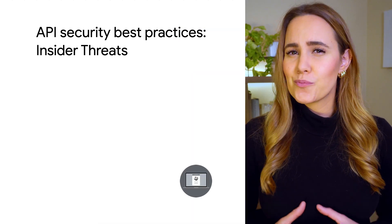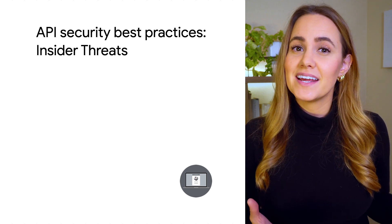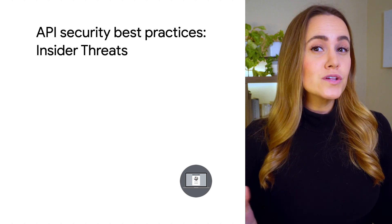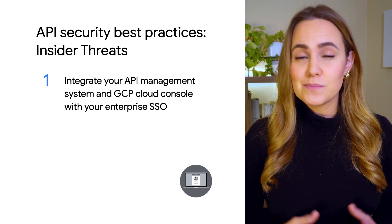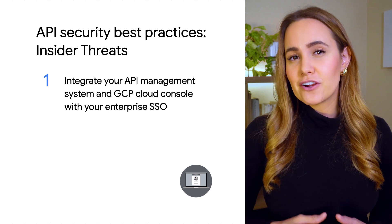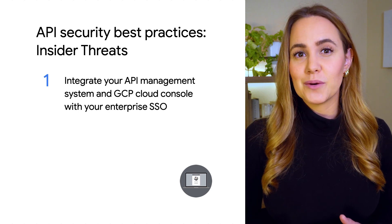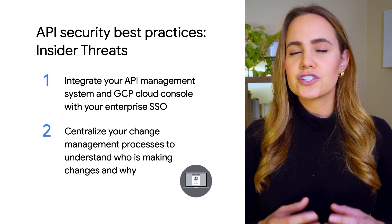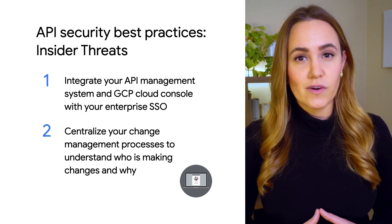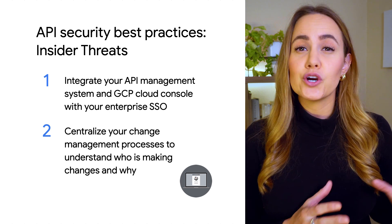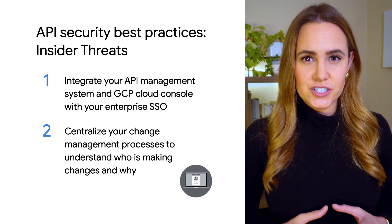Insider threats are an increasing problem for enterprise security and remind us that security breaches don't just come from the outside in, but can also come from within. With so many employees and contractors having access to sensitive information in an organization, a key first step to defend against insider threats is to integrate your API management system and your Google Cloud console with your enterprise single sign-on system. You also want to centralize and structure your change management processes so that developers have clear visibility of any changes that are occurring to your software infrastructure. This includes knowing who is making the changes, what the changes are, who approved them, and why the changes are being made.